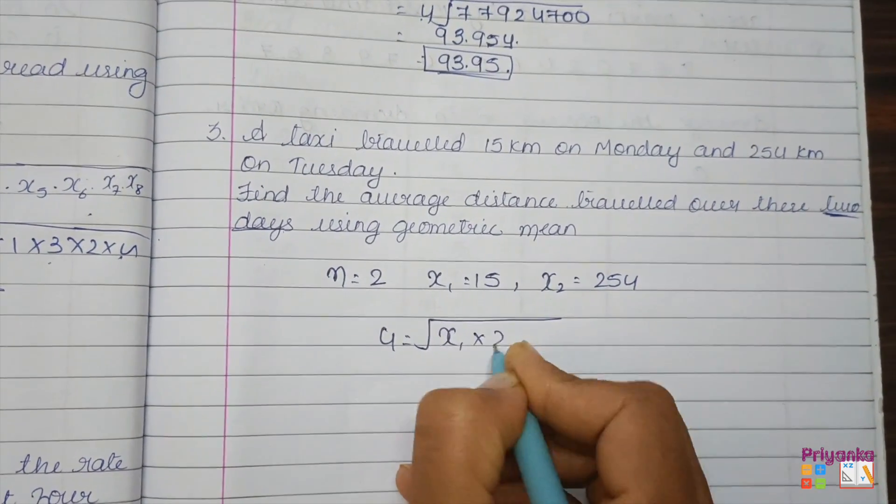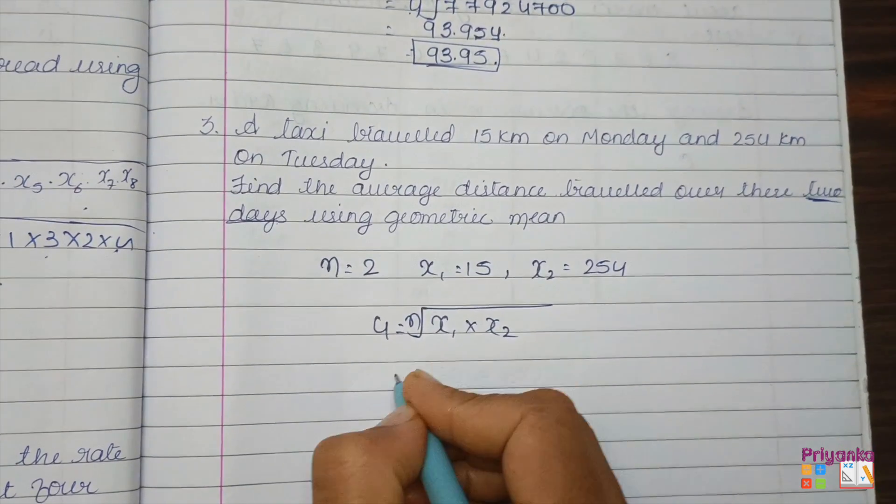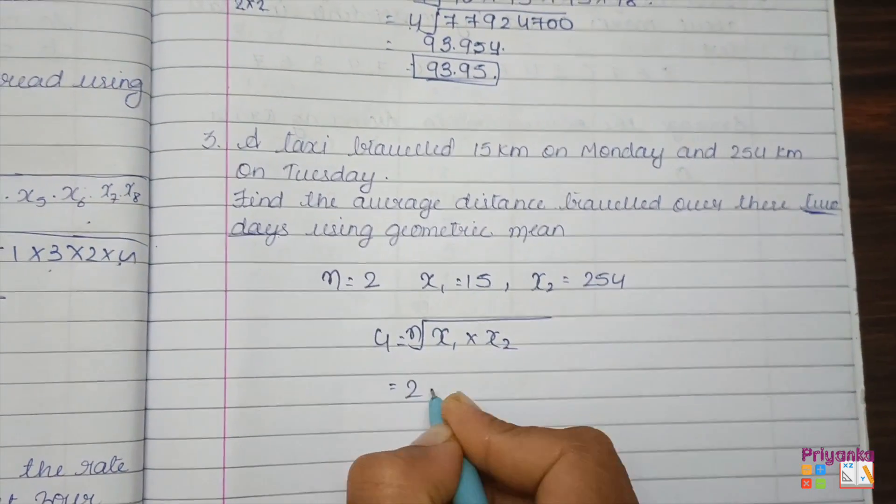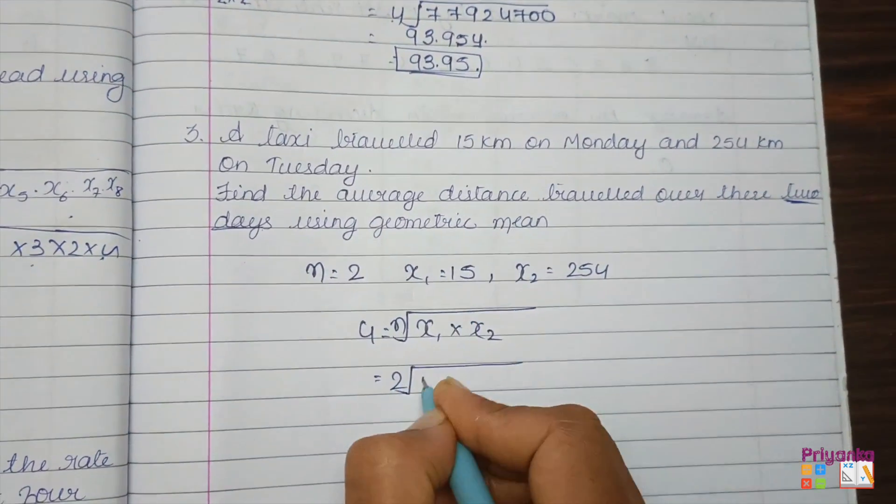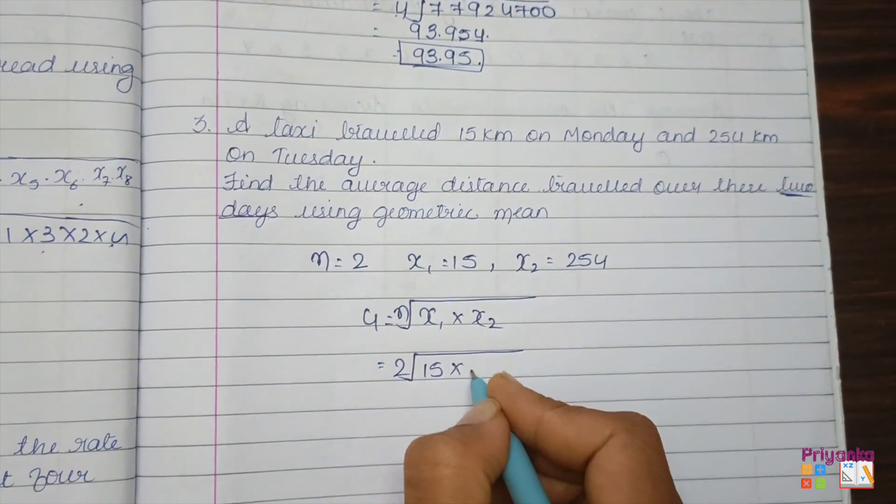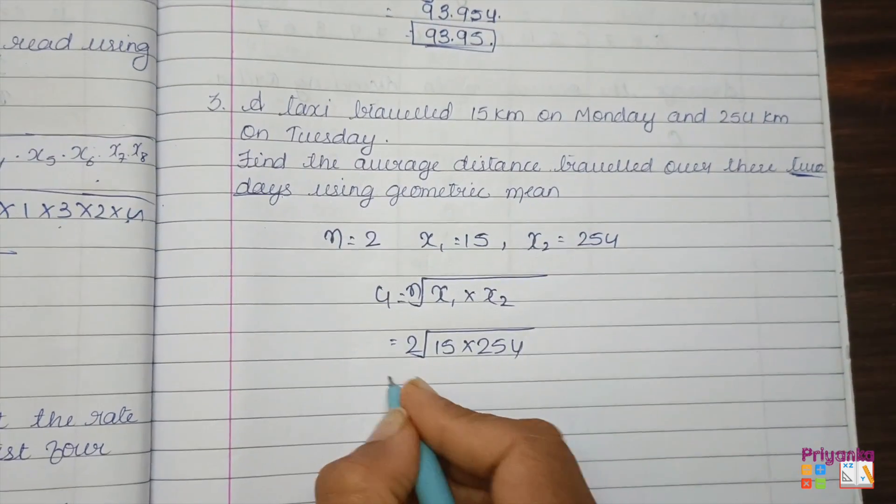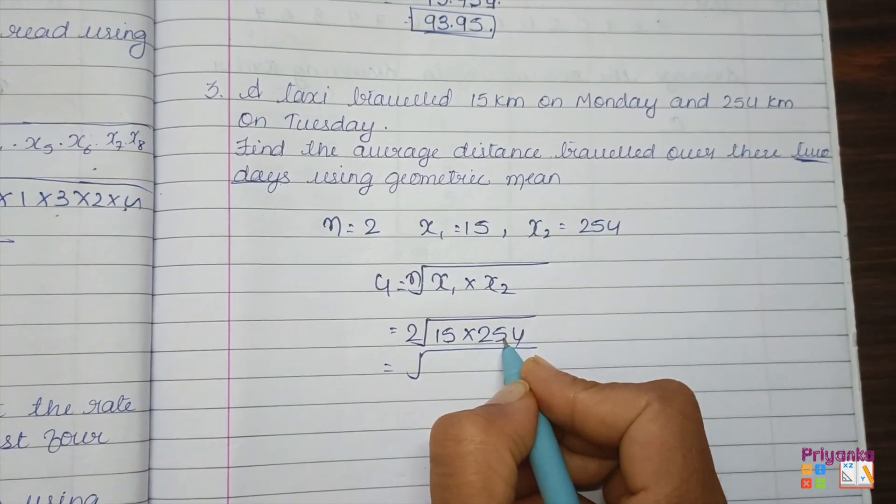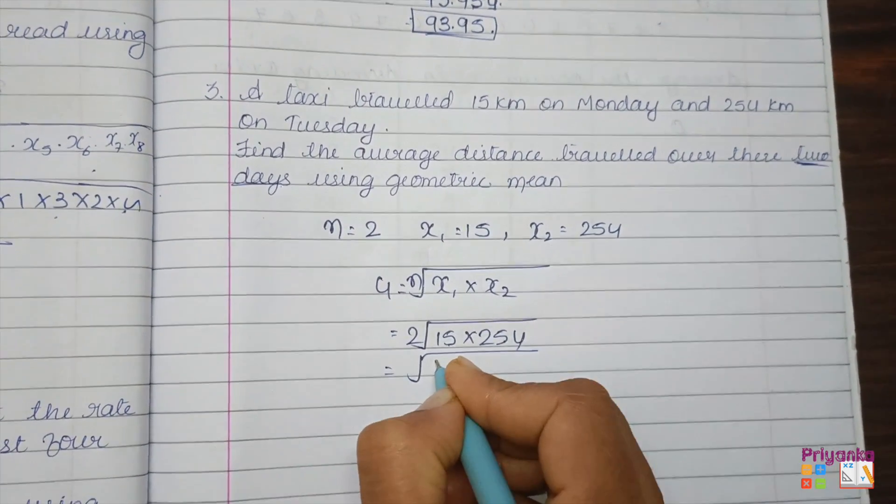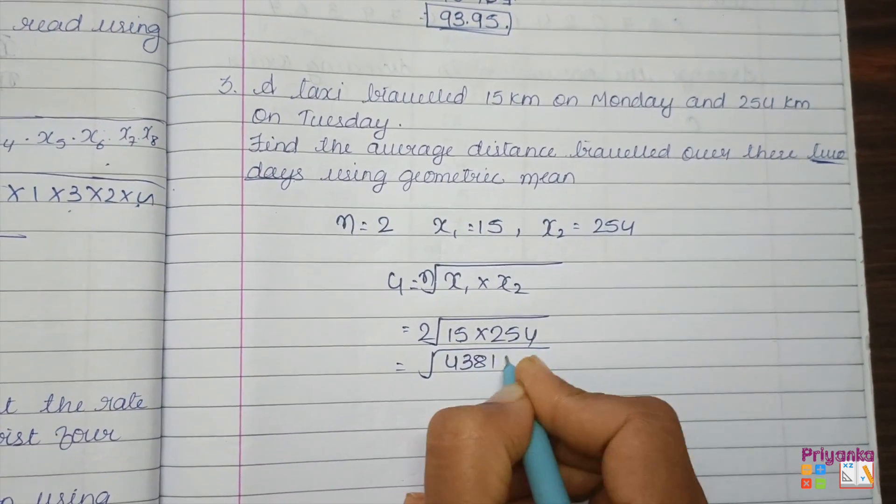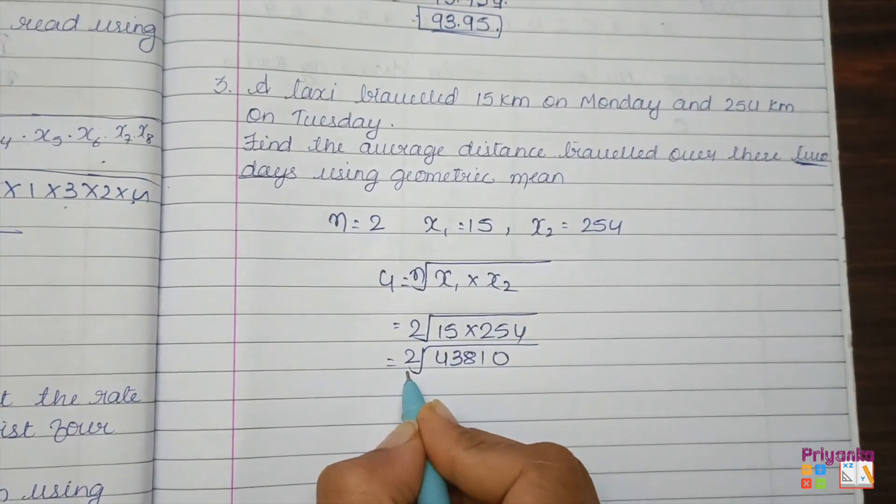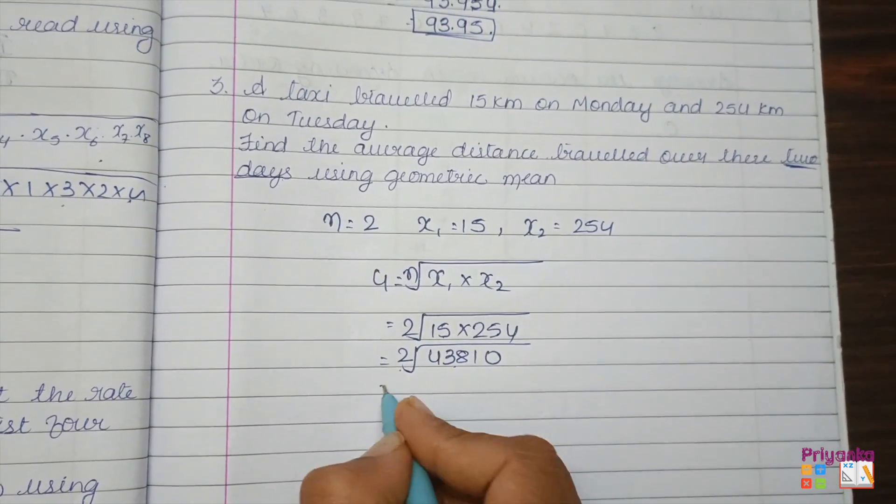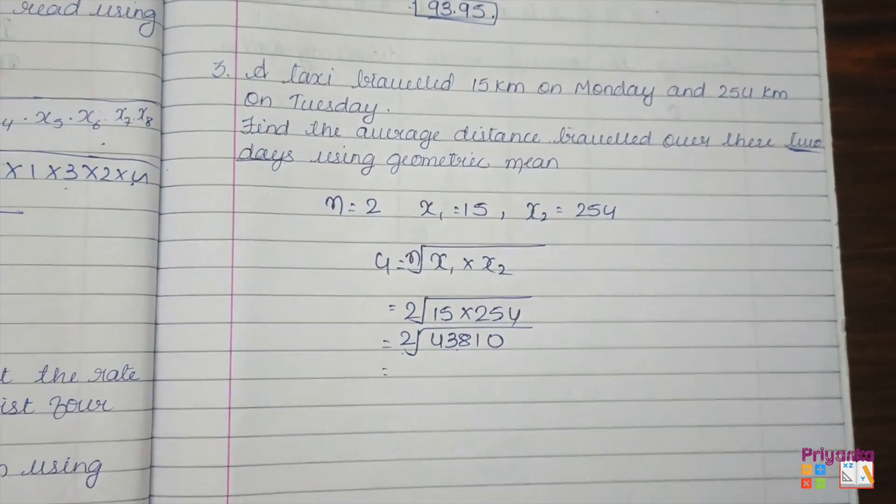x₁ × x₂, and here n. N is 2, under root. x₁ is 15 × 254. First, let's multiply 15 × 254. You will get 3,810. And here, only once you have to press square root; you will get the correct answer here.